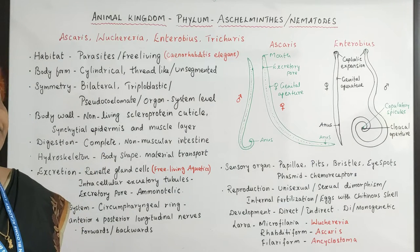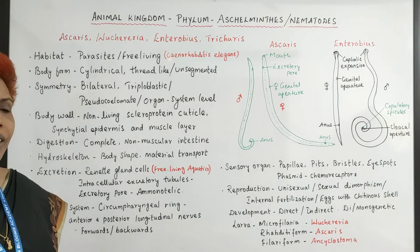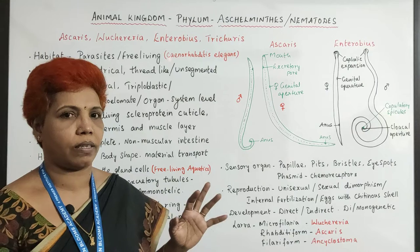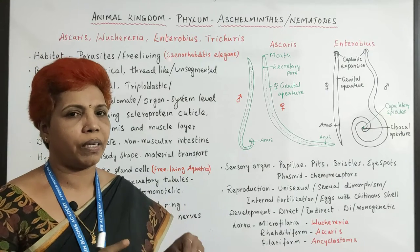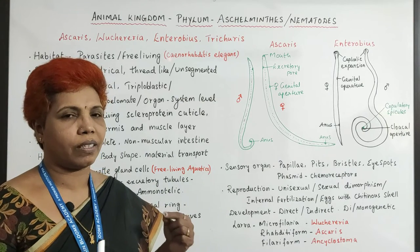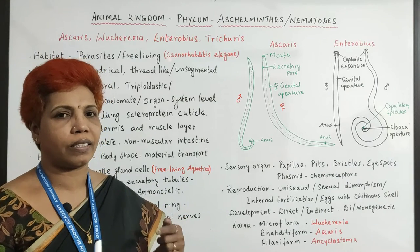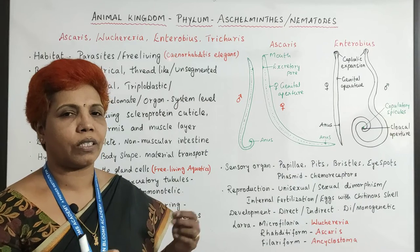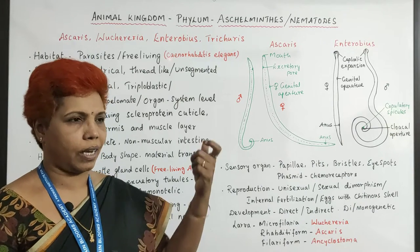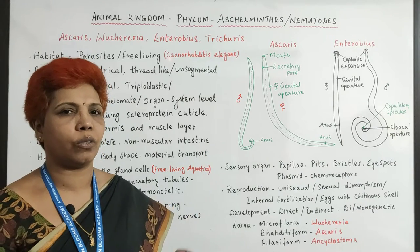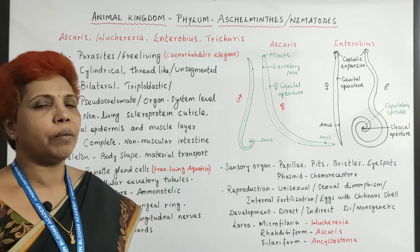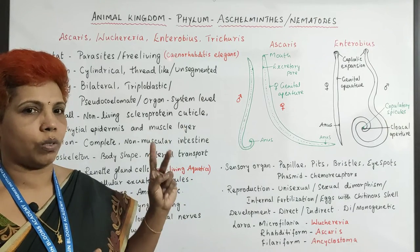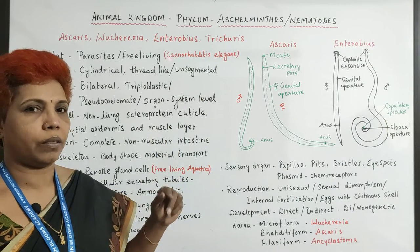Digestion is complete here — they have a mouth and an anus. One notable thing is that the intestine is non-muscular, so there is no musculature in it. It is a straight tube through which food passes. It is complete with two openings, top and bottom.